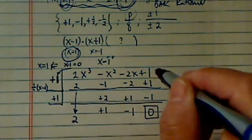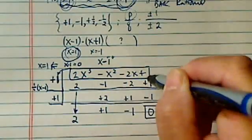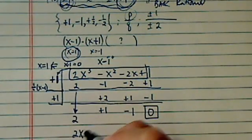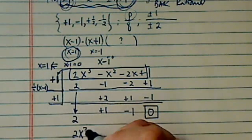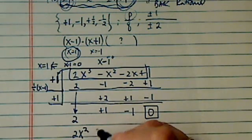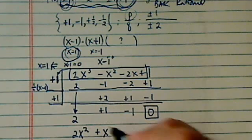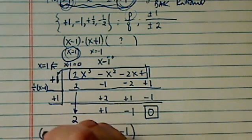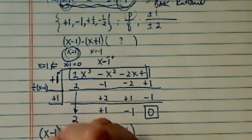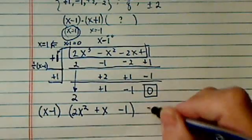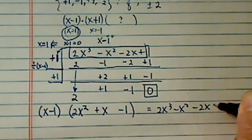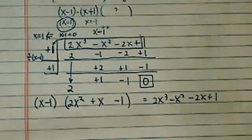So what this says, if you were to divide this long polynomial by x minus 1, you will have 2x squared, the power reduced by 1, plus x minus 1 as the result. So far, we have that this is equal to the original 2x cubed minus x squared minus 2x plus 1.